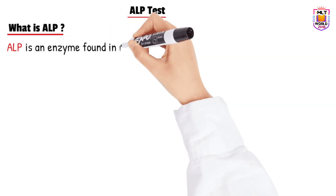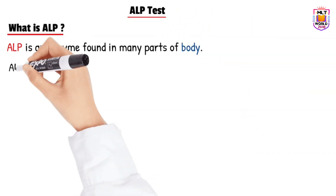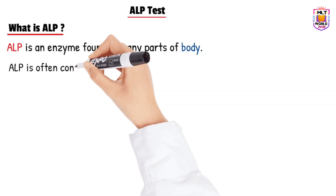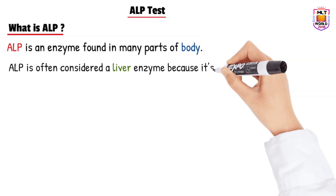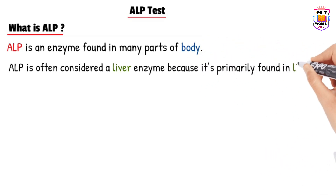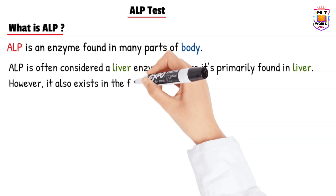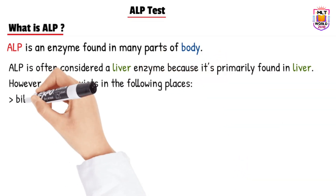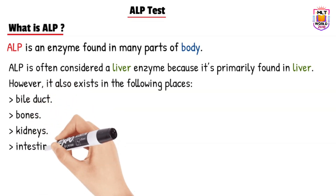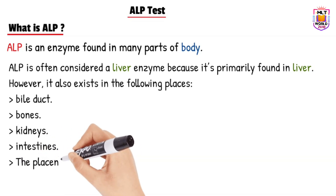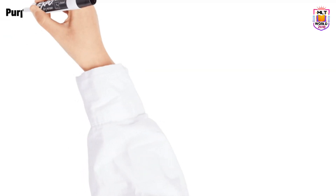Alkaline phosphatase is an enzyme produced in our body. Primarily, this enzyme is found in the liver, but it is also found in other organs. The primary organ is the liver, but ALP is also produced in the bile duct, bones, kidney, intestine, and the placenta of pregnant ladies.